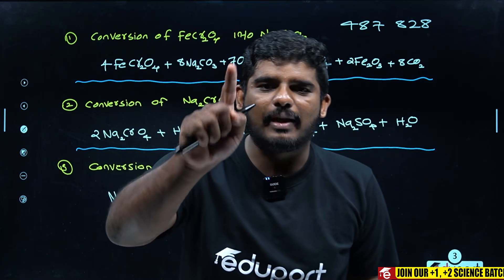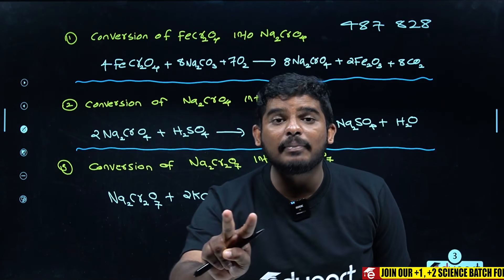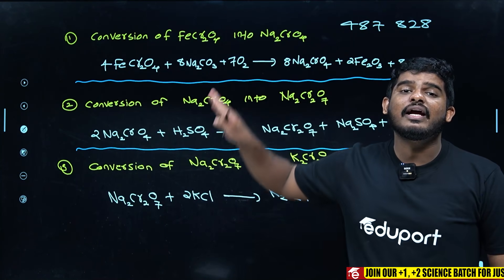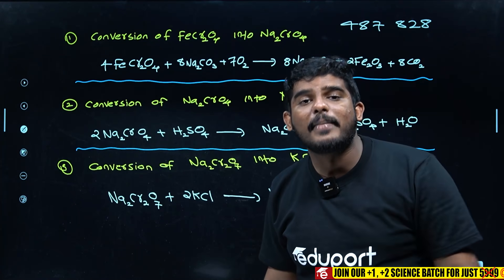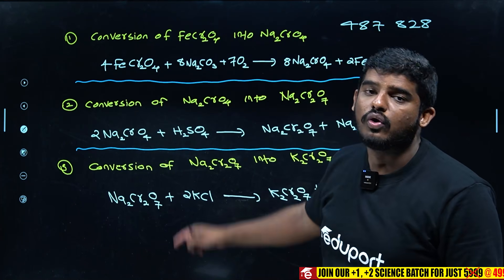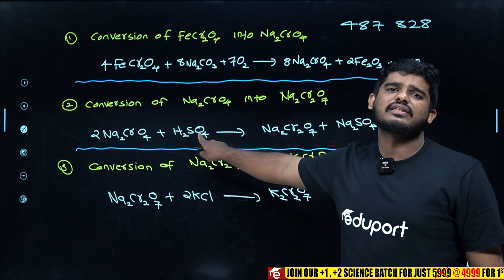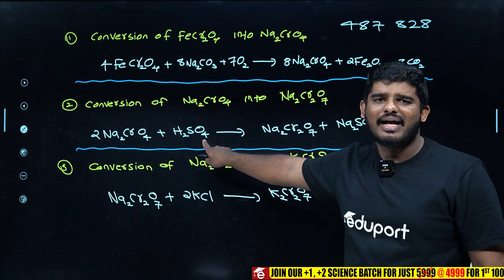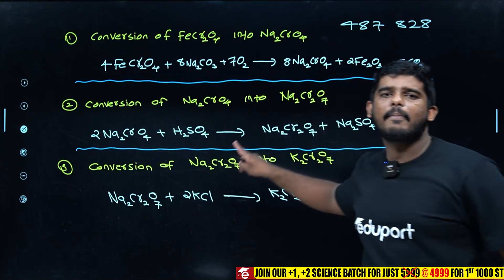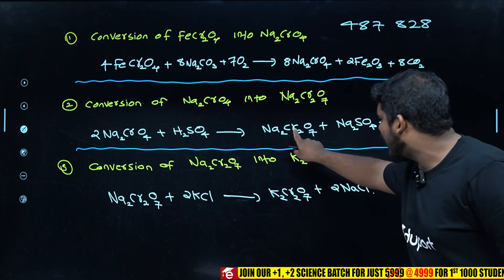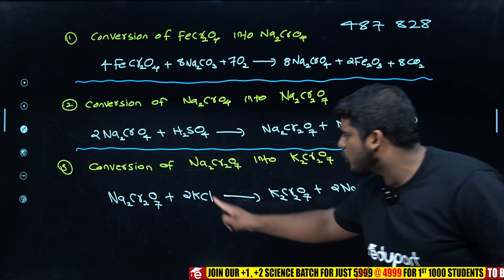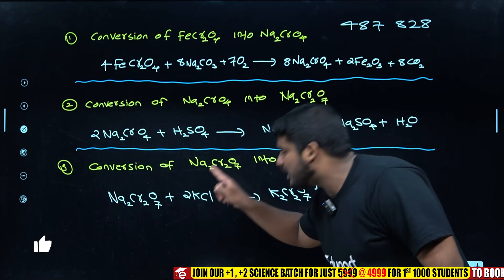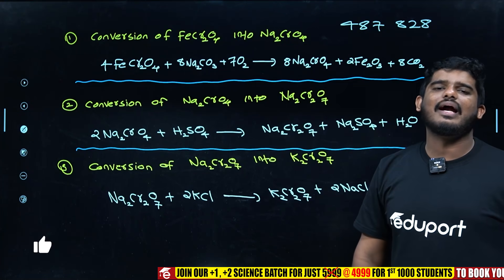That is the first step. In the second step, we will get Sodium Chromate converted to Sodium Dichromate, and then to Potassium Dichromate with Potassium Chloride.